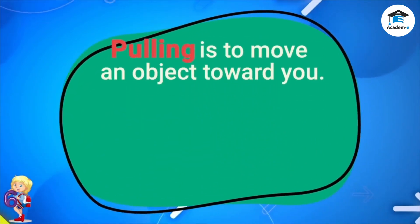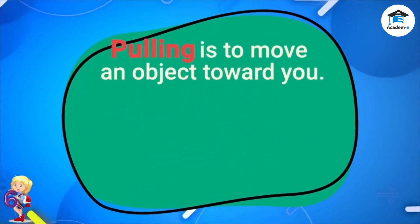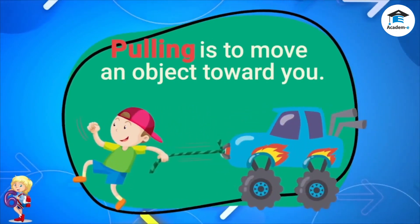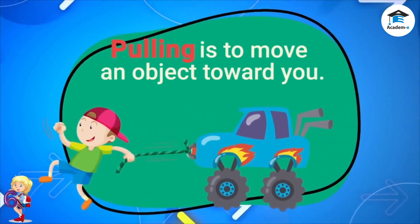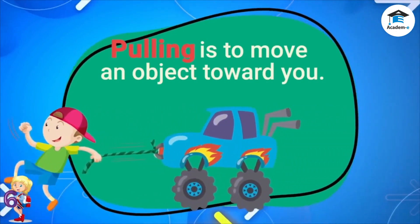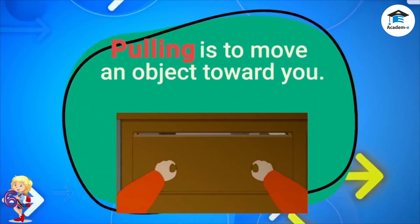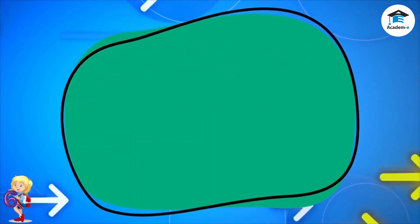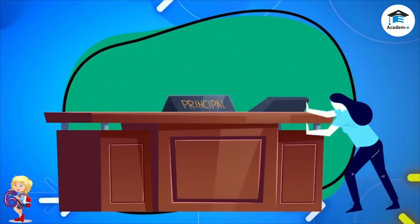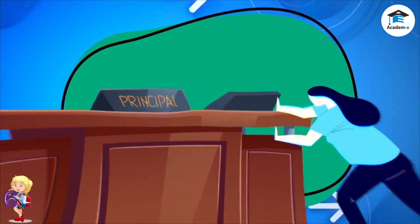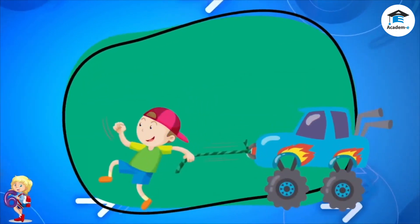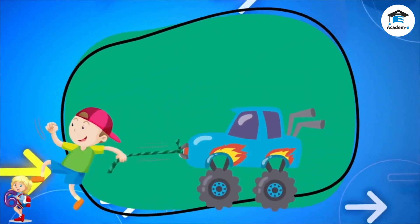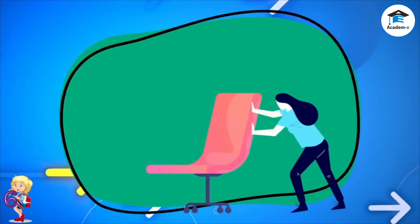Pulling is to move an object toward you. For example, when you pull the string of a toy car or a drawer, you make it move toward you. You have to use a certain amount of force to make objects move. It takes more force to move big and heavy objects, and less force to move and lift light objects.